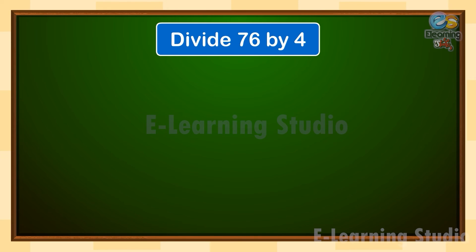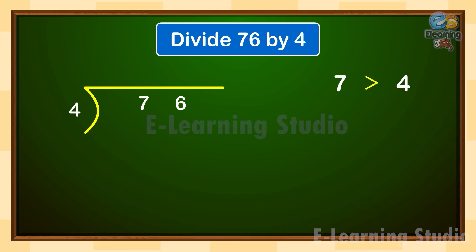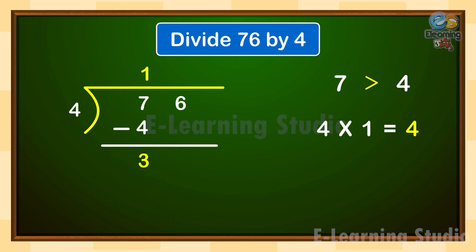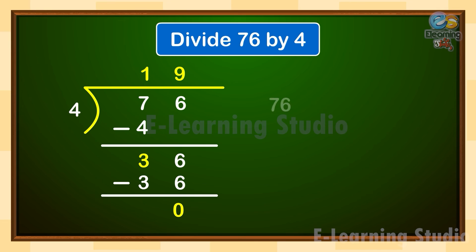Let us understand with the help of another example. Let us divide 76 by 4. Here, 7 is greater than 4, so 4 goes into 7 one time. By dividing 7 by 4, we get 1 as the quotient. Write 1 as the first digit of the quotient on top. Write the product — 4 ones are 4 — below 7 and subtract to get 3. Bring down the next digit, so we have 36 as the new dividend. 4 goes into 36 nine times. Write 9 as the second digit of the quotient. Write the product — 4 nines are 36 — below 36 and subtract to get 0. 76 divided by 4 is 19 with remainder 0.